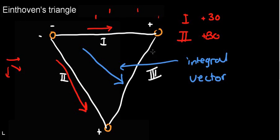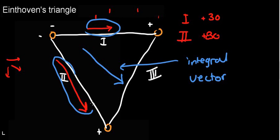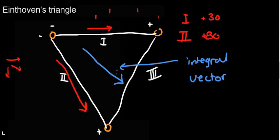Eindhoven's triangle is basically a representation of three different points where we're measuring the current going from one point to the other. We can draw vectors, which is going to be easier for us to understand what direction the electrical conductivity is going.